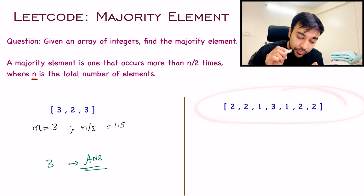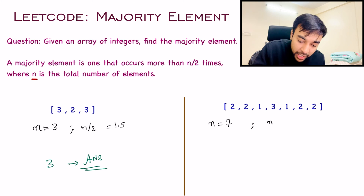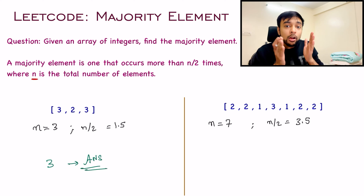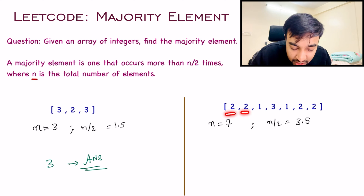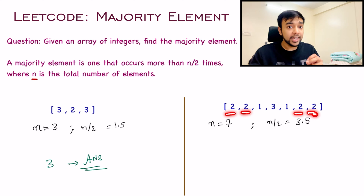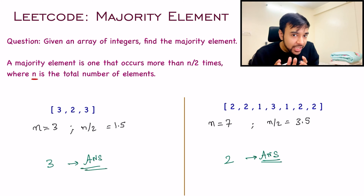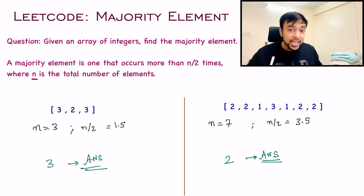Similarly, let us look at our second test case. The value of n is 7, so n by 2 will be 3.5. You need to look for a majority element that occurs more than 4 times, or just 4. The element 2 is occurring 4 times, and hence 2 is the majority element — 2 will be your answer. For this problem, it is guaranteed that the array will have a majority element.